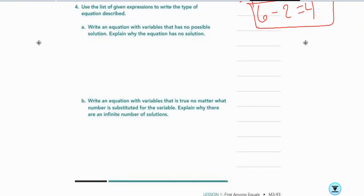A says, write an equation with variables that has no possible solution. Explain why the equation has no solution. Well, what I would do is I would say something like, well, I could have 2x equals 2x. That's true. All the time. It doesn't matter what I do.